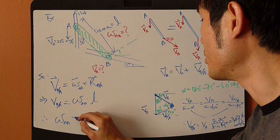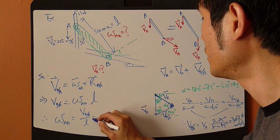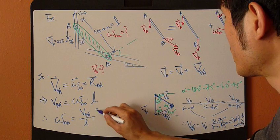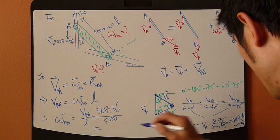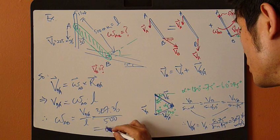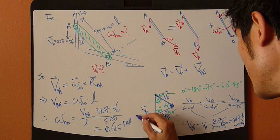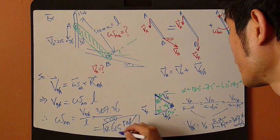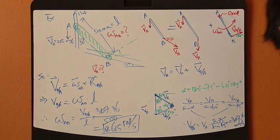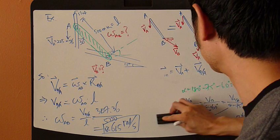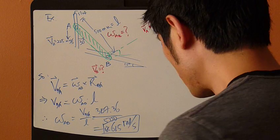So omega AB can be solved for VB/A divided by L. VB/A is this right here, 307.36, divided by 500. So that gives you 0.615. So you solve for this omega right here.